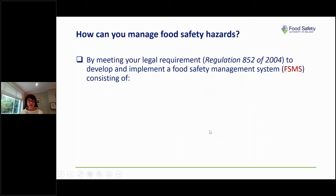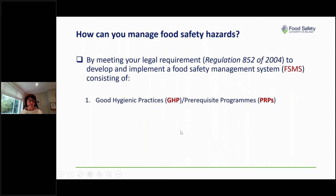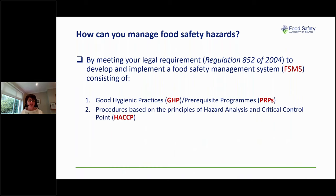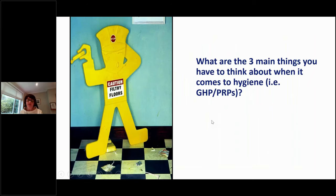Now we've discussed the hazards you need to control — how can you manage them? The legislation is clear. Regulation 852 of 2004 says you must develop and implement a food safety management system consisting of good hygienic practice — also referred to as prerequisite programs or PRPs — and procedures based on the principles of HACCP. Those are the two principal components of a food safety management system.